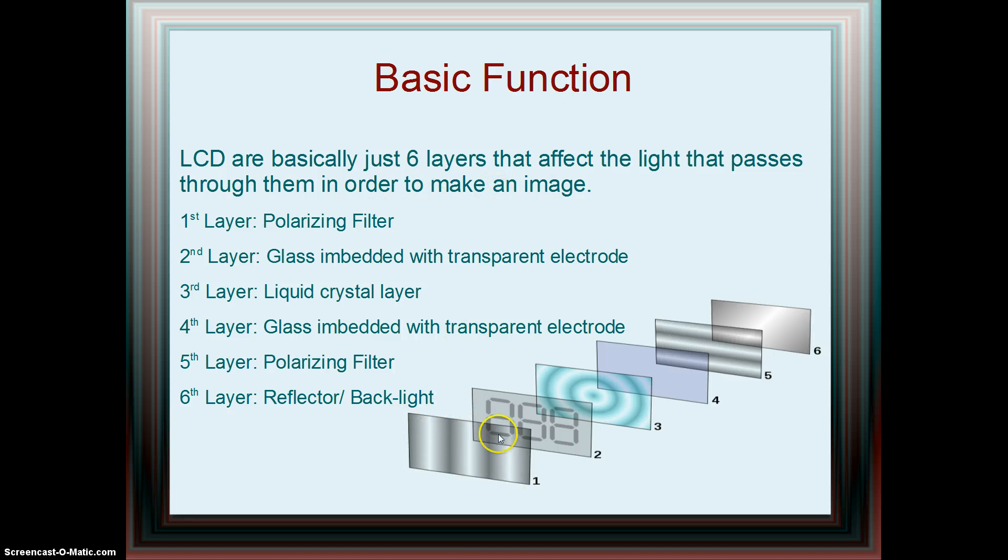The first layer is a polarizing filter, the second layer is glass with transparent electrodes embedded in it, the third layer is the liquid crystal layer, the fourth layer is another layer with glass embedded with transparent electrodes, the fifth layer is a polarizing filter that is perpendicular to the first filter, and the sixth layer is either a reflector or a backlight.